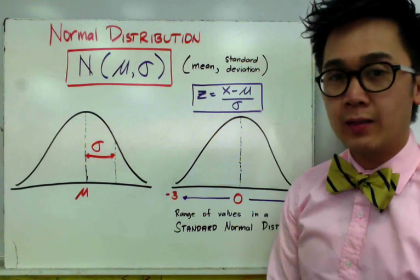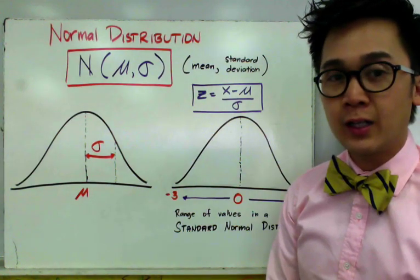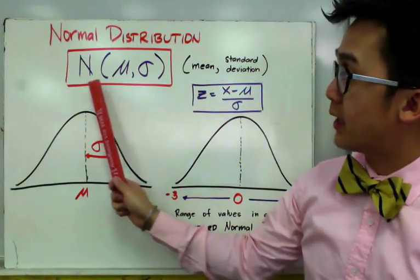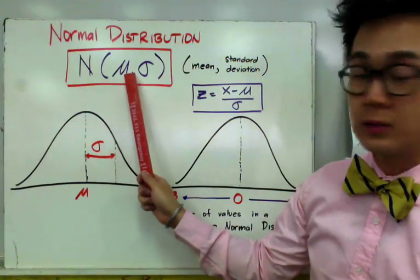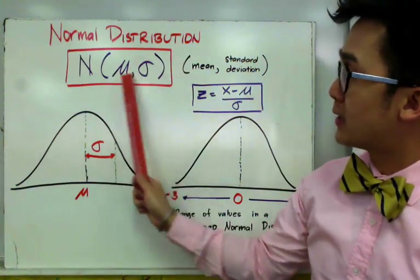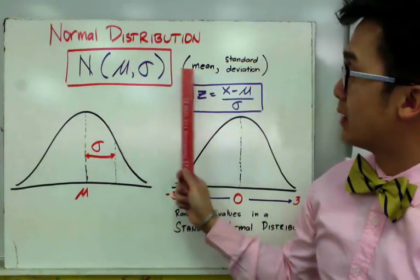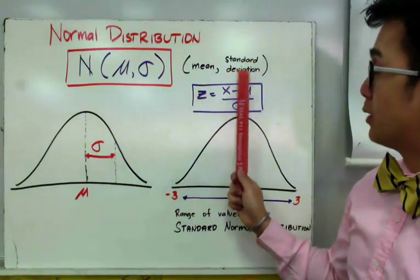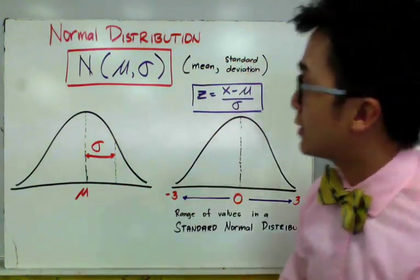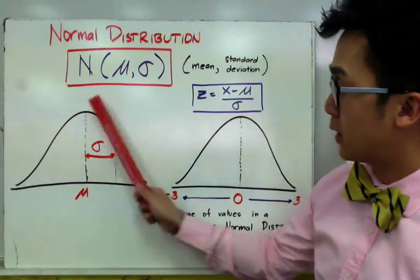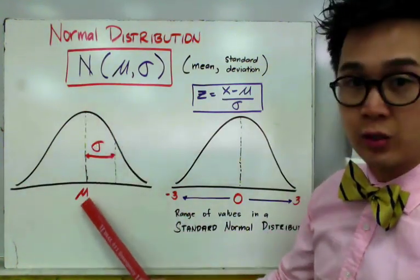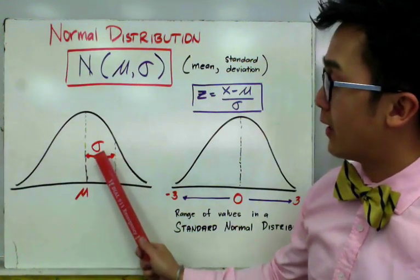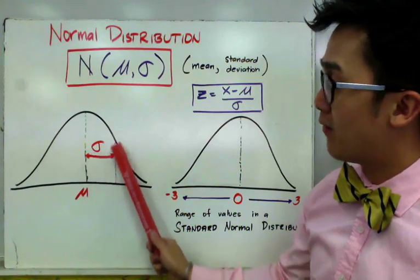Today we're going to learn how to use the z-score formula in a normal distribution. The statistical notation we are using is given by N(μ, σ). These are Greek symbols where mu represents the mean and sigma represents the standard deviation. In a normal distribution, we have a bell-shaped curve where the center is your mu or mean, and the spread of the distribution is given by the standard deviation.